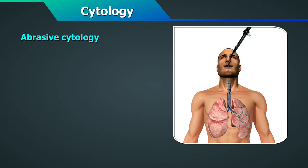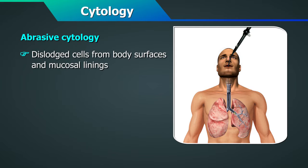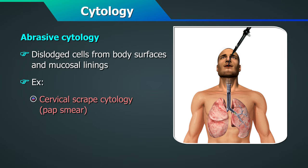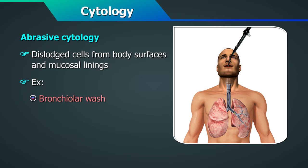Second, abrasive cytology dislodges cells from the body surfaces and mucosal linings. Examples include cervical scrape cytology such as pap smear, scrapings, bronchial washings, swabs, etc.